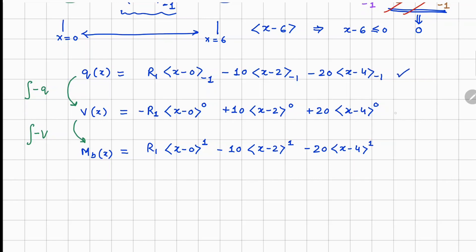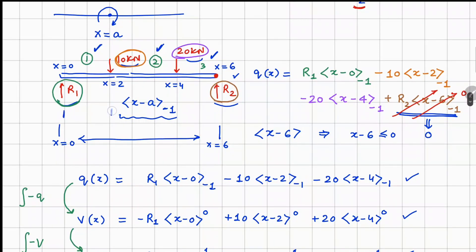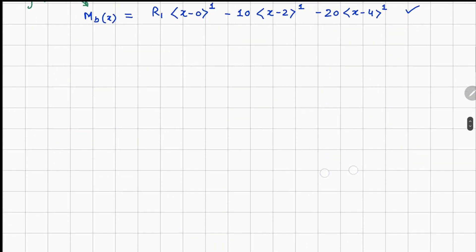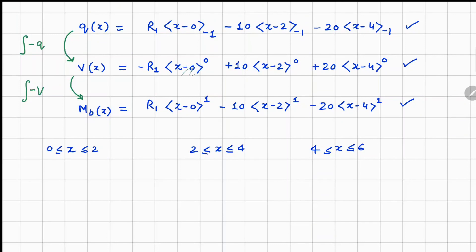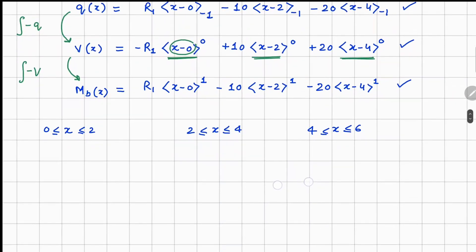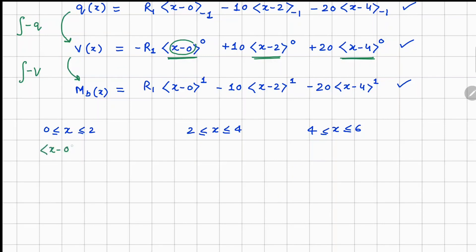Now we have single expressions for q, V, and M. We evaluate these over three beam segments: 0 to 2, 2 to 4, and 4 to 6. In each segment we check which singularity functions have positive inner arguments. In the first segment only (x minus 0) is positive; in the second segment (x minus 0) and (x minus 2) are positive; in the third segment all three are positive.